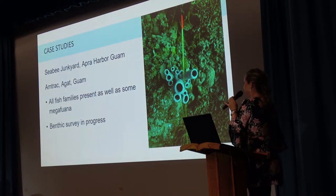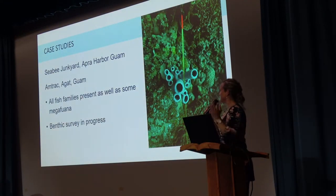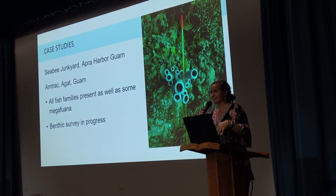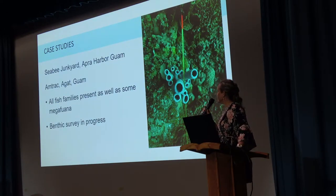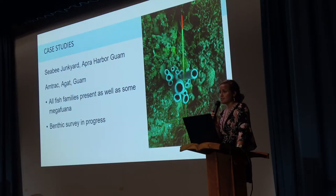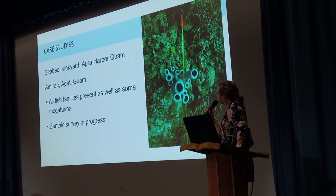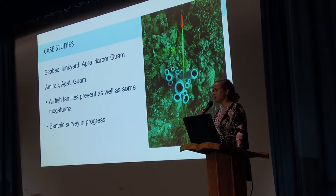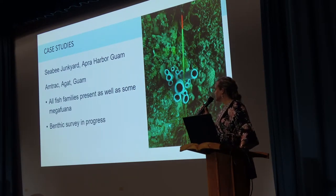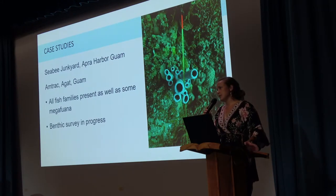We had the chance to try the protocol at two sites: CB Junkyard and the AMTRAC and agate. We're still processing the benthic survey, but all fish families were present at both sites, as well as some megafauna, which is a good sign. From personal observation on the benthic survey, there is a ton of padina — a leafy algae — all over CB Junkyard, and I'm noticing more dead and bleached coral at that site. When we get the data, it'll be interesting to see how it compares to my previous research at the site.